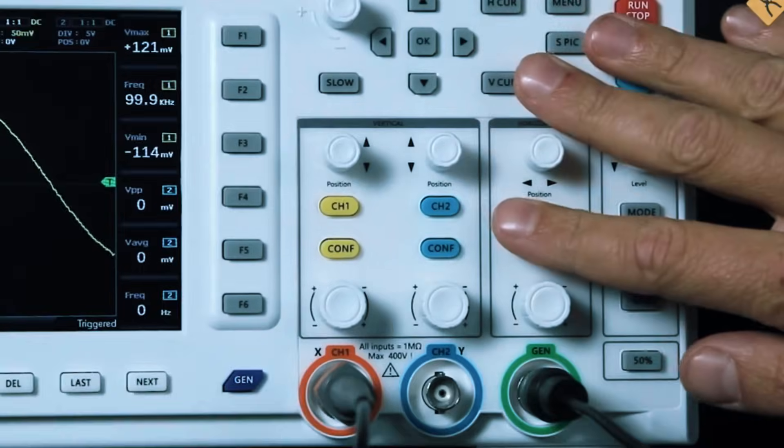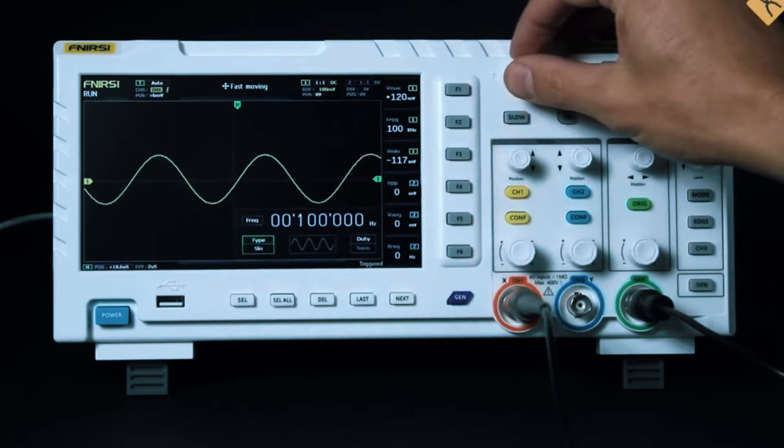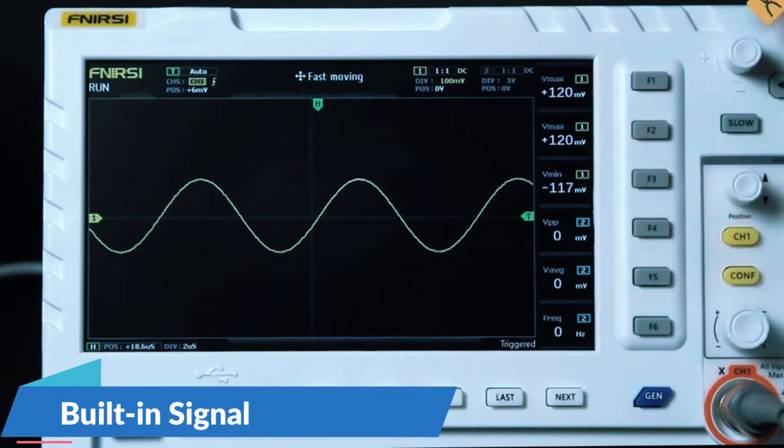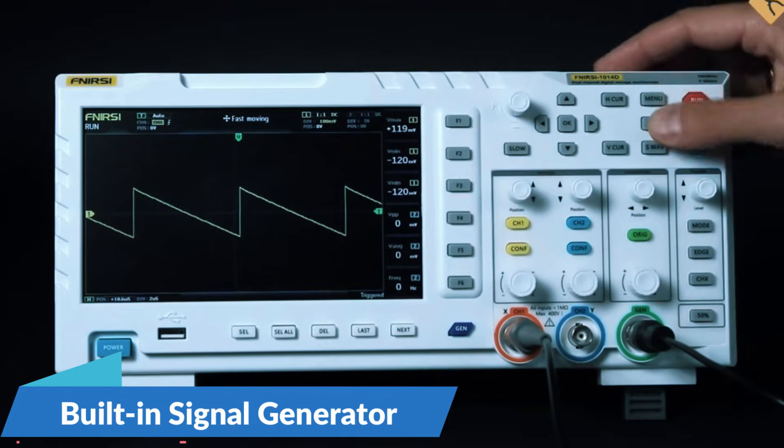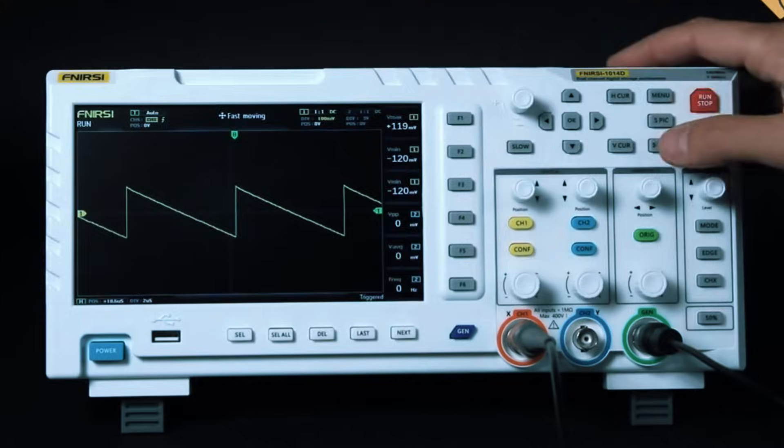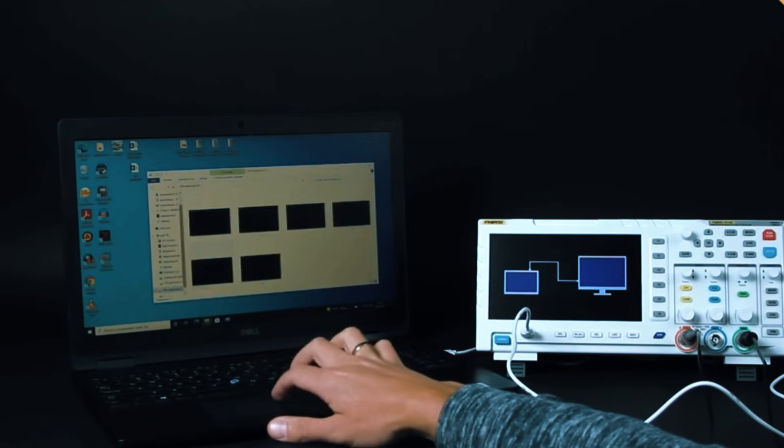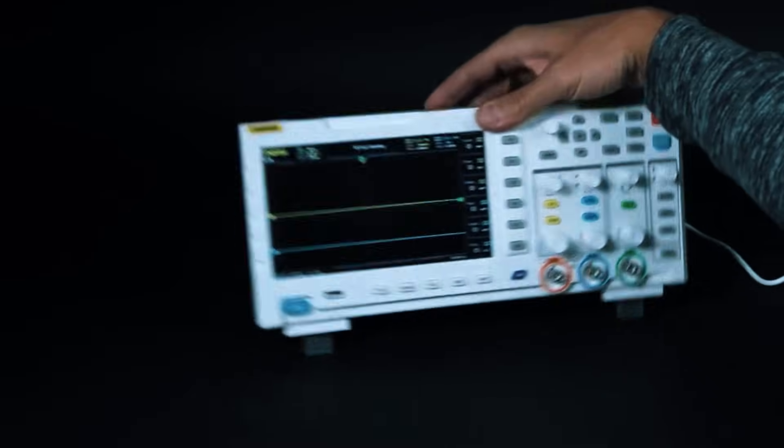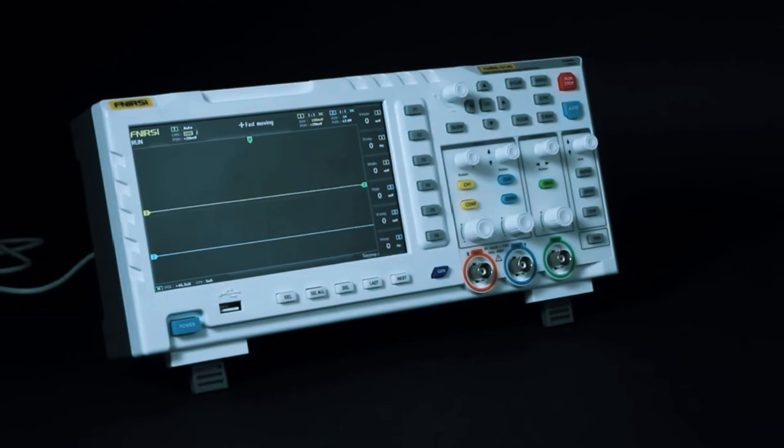Many budget oscilloscopes compromise on usability, but the 1014D offers a clear, responsive display that makes waveform observation a breeze. Another major plus is the built-in signal generator. This means you can test circuits without needing extra equipment, making it a huge win for beginners working on small-scale electronics projects. While professional engineers might find its processing speed and memory depth limiting, for hobbyists and students, this scope is more than capable.